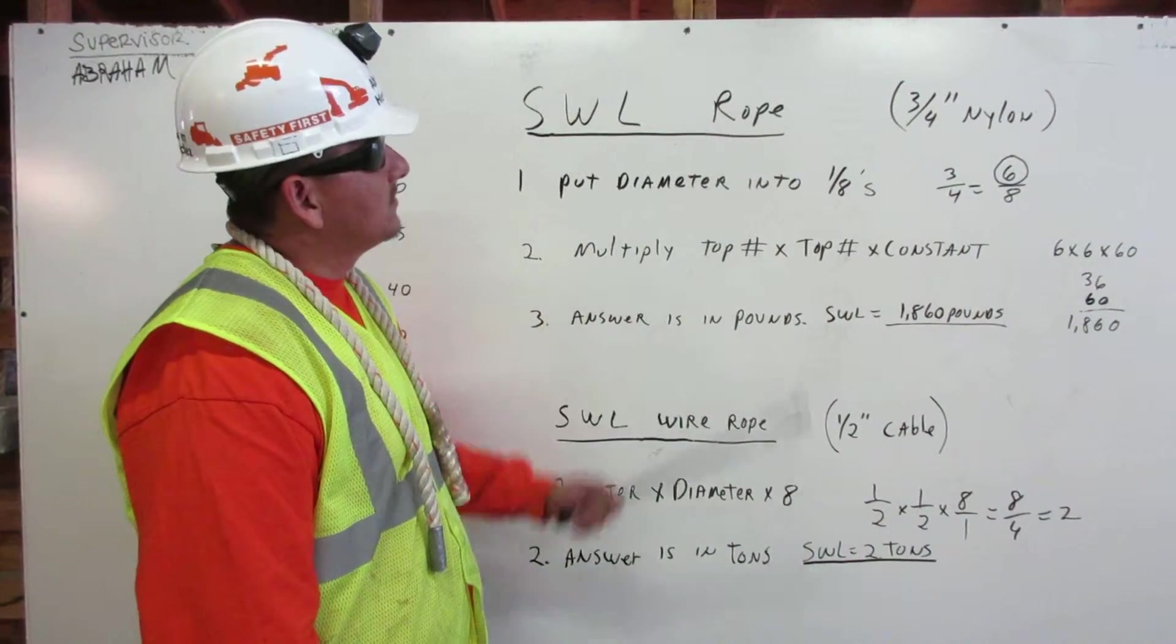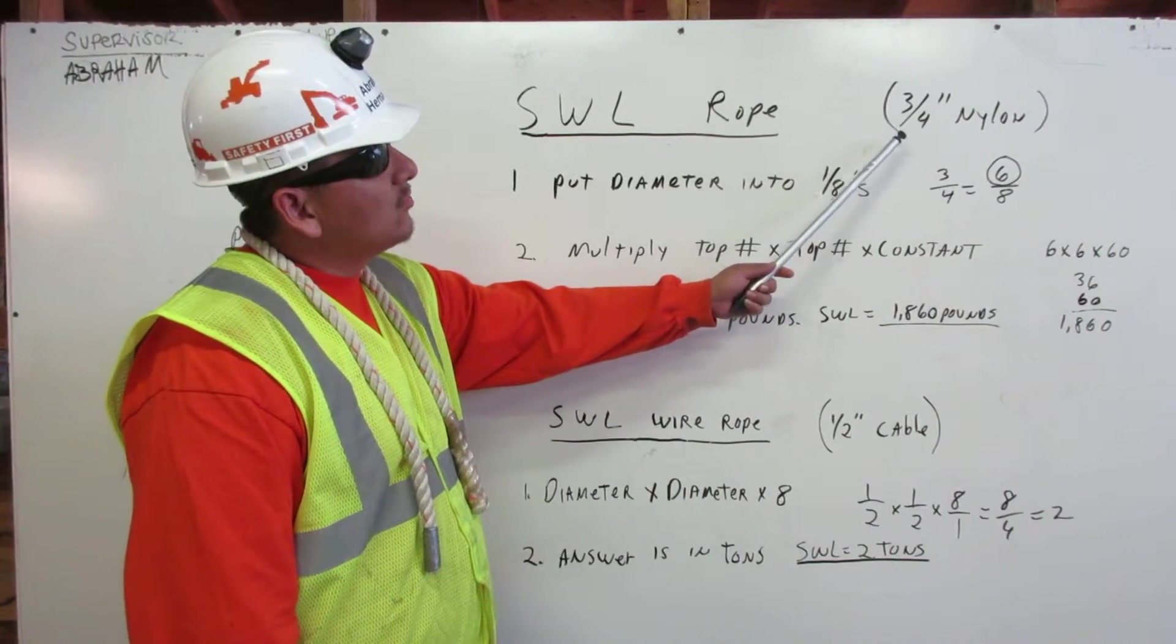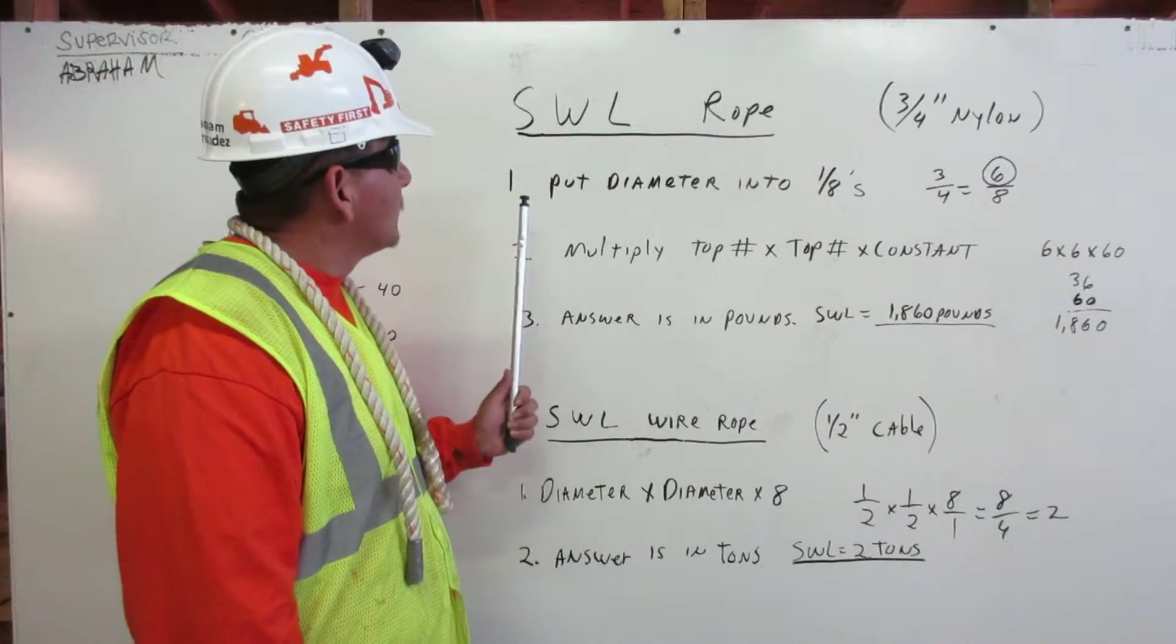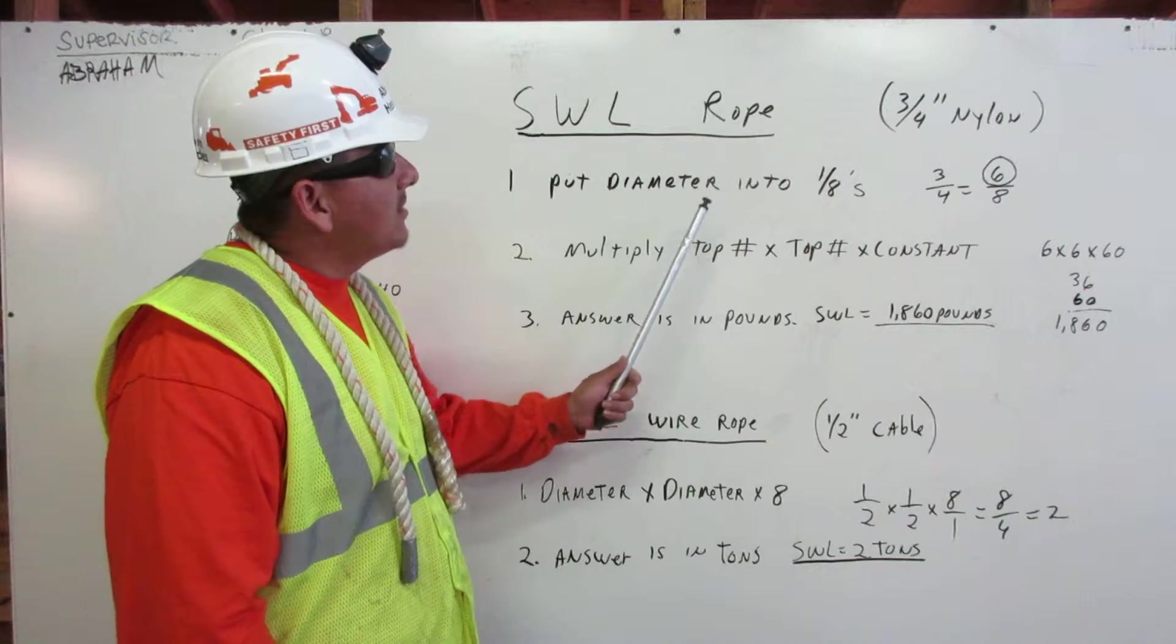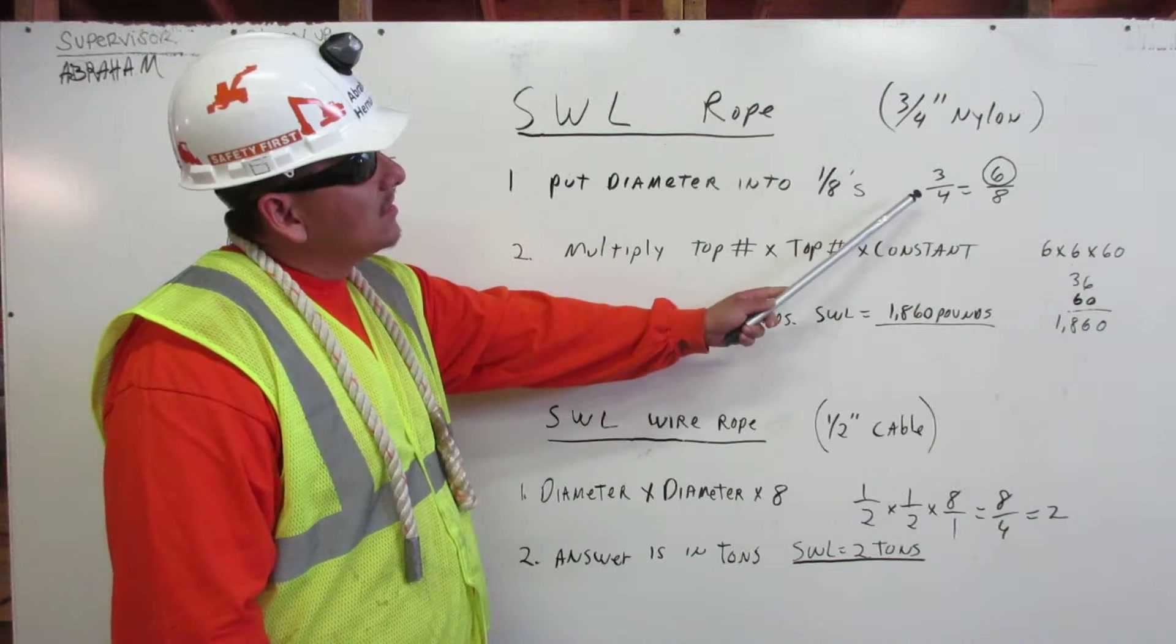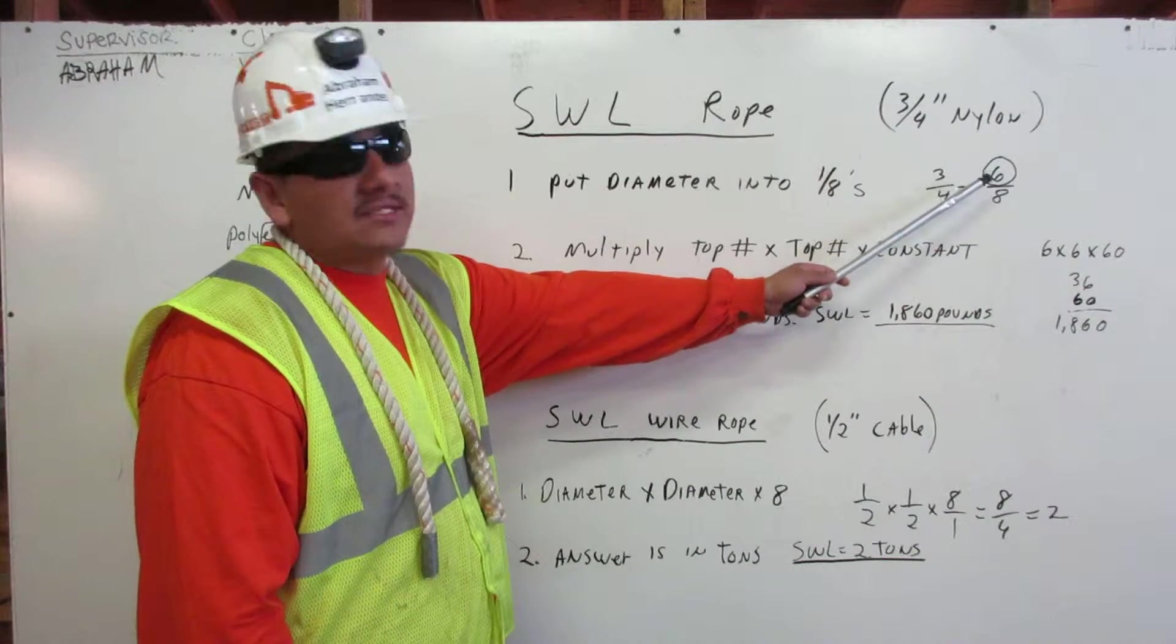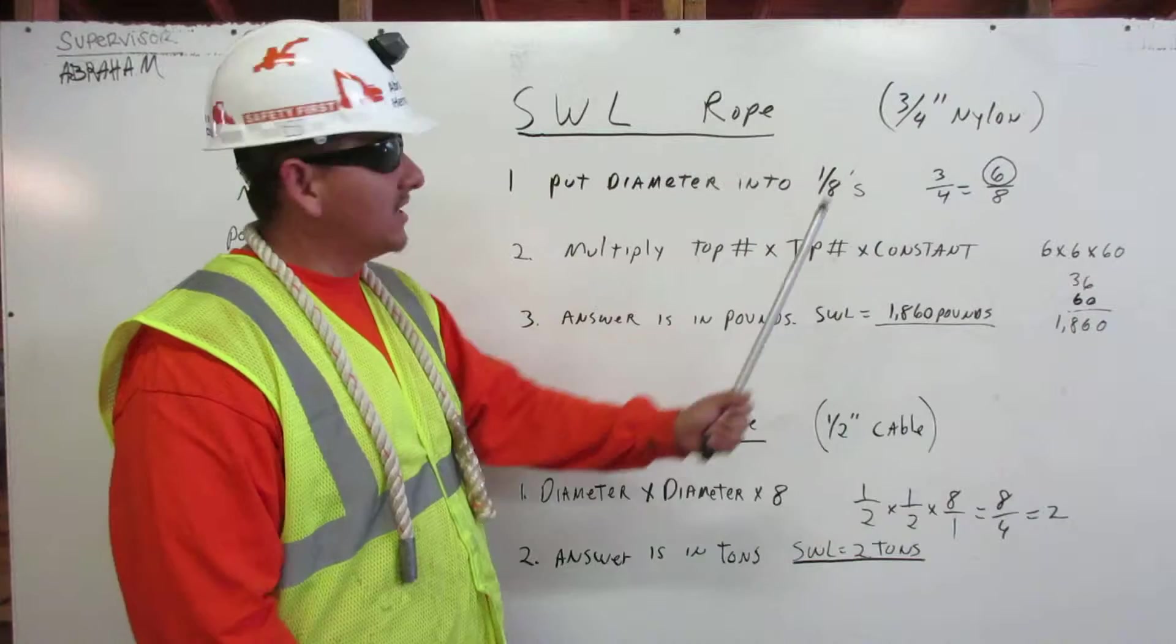Safe working load for rope. In this case we're using three-quarter inch nylon like this. Number one, put the diameter in two eighths. So we have three quarters equal six eighths. We circle the six because that's the number that interests us right here.